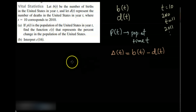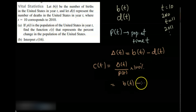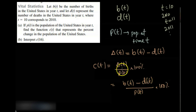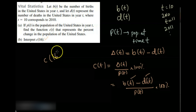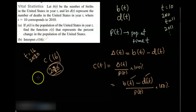The percent change c of t is: change divided by total population, times 100 percent. You just insert those values. This is an example involving both the difference and the quotient of two functions. c of 16 means t equal to 16, which is 2010 plus 16, so that represents the percentage change in population in the year 2026.